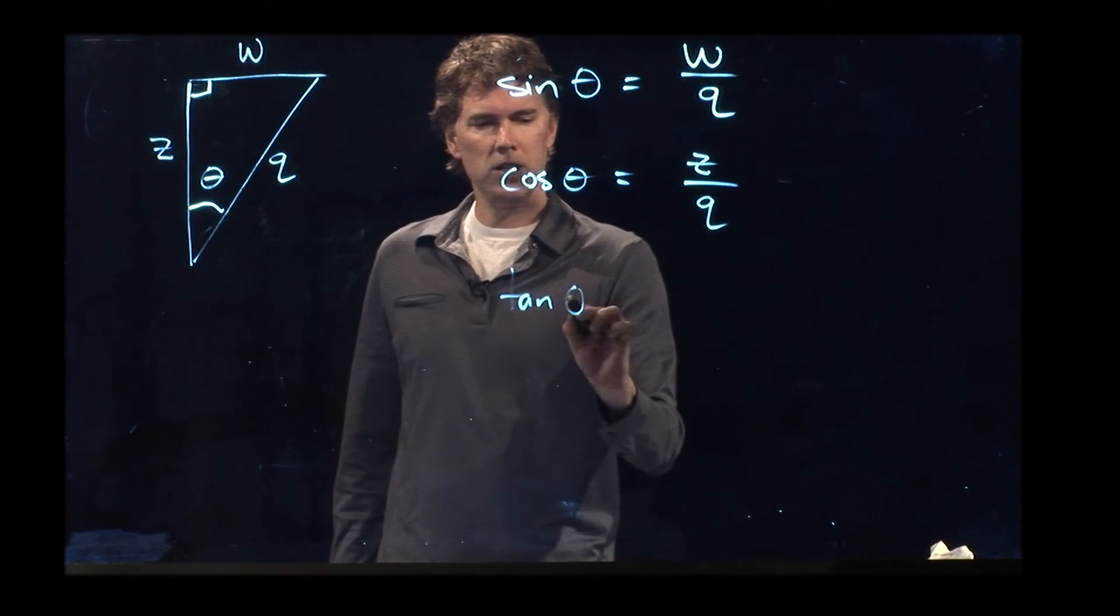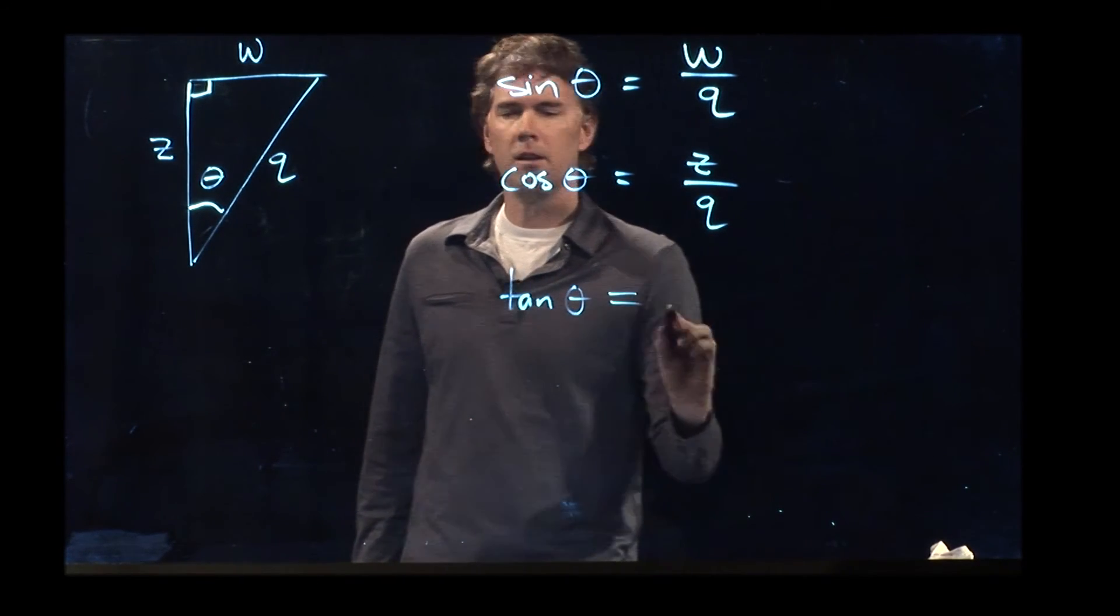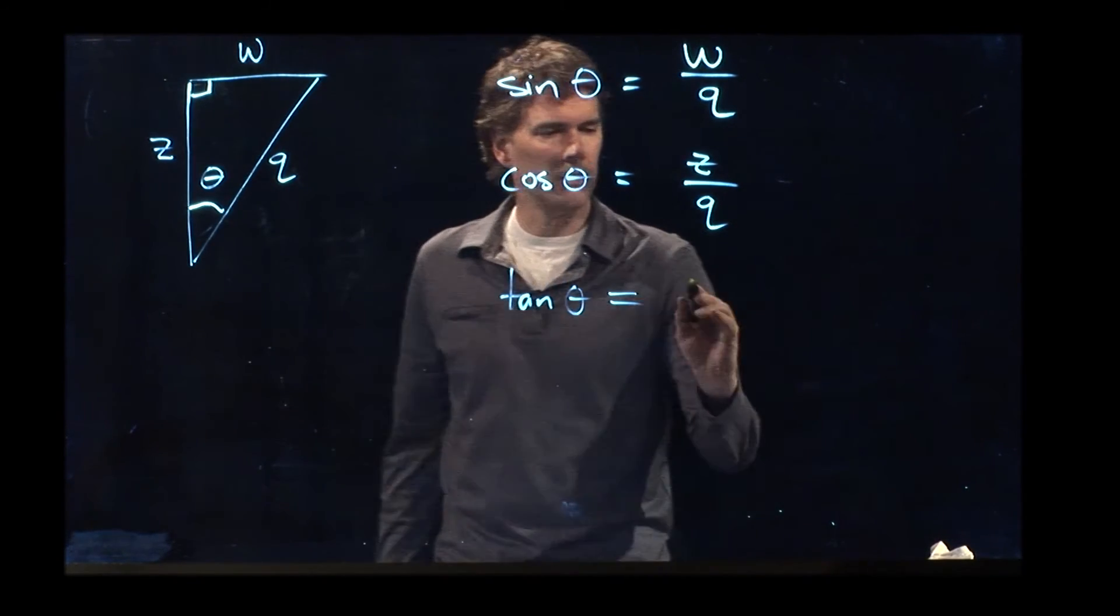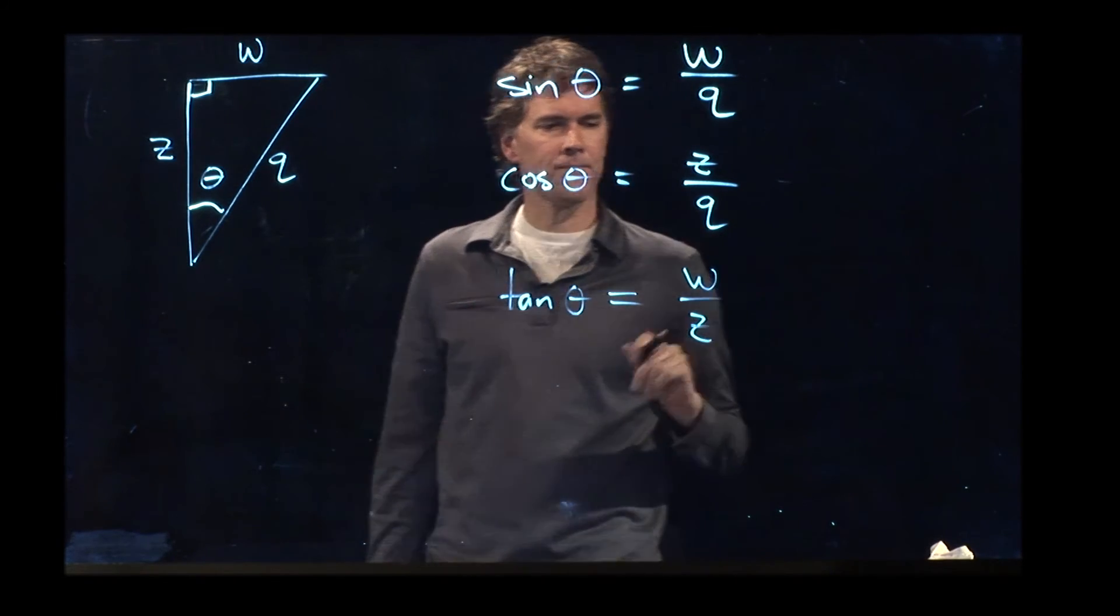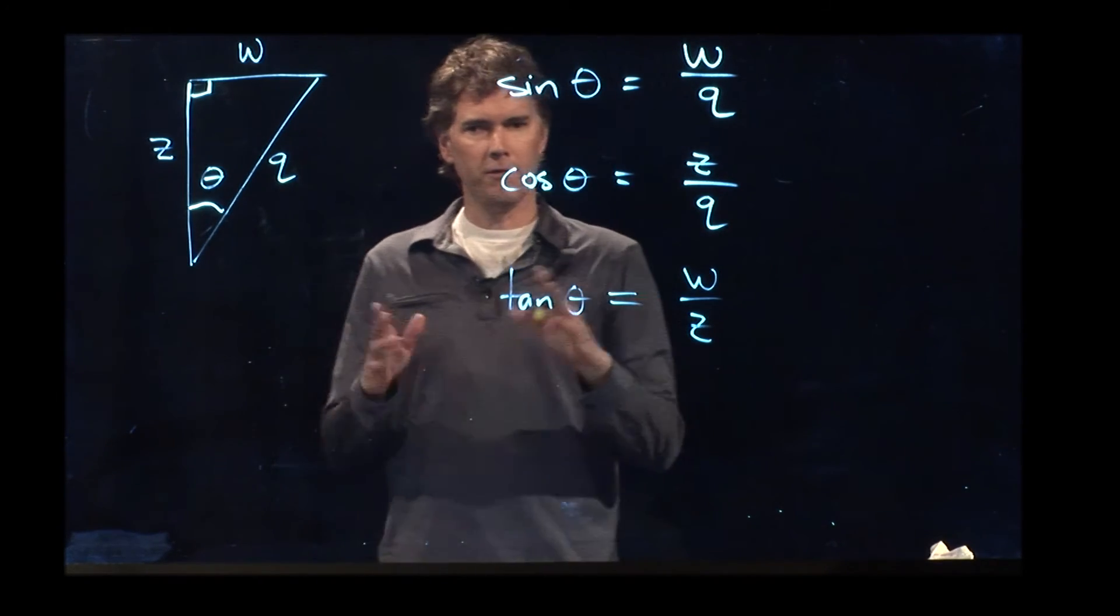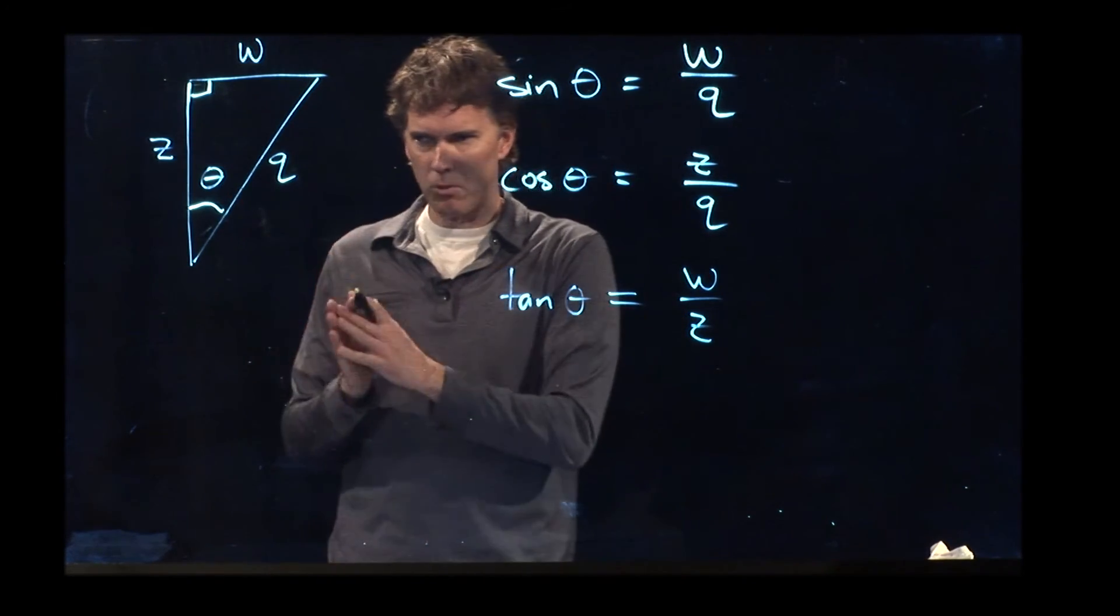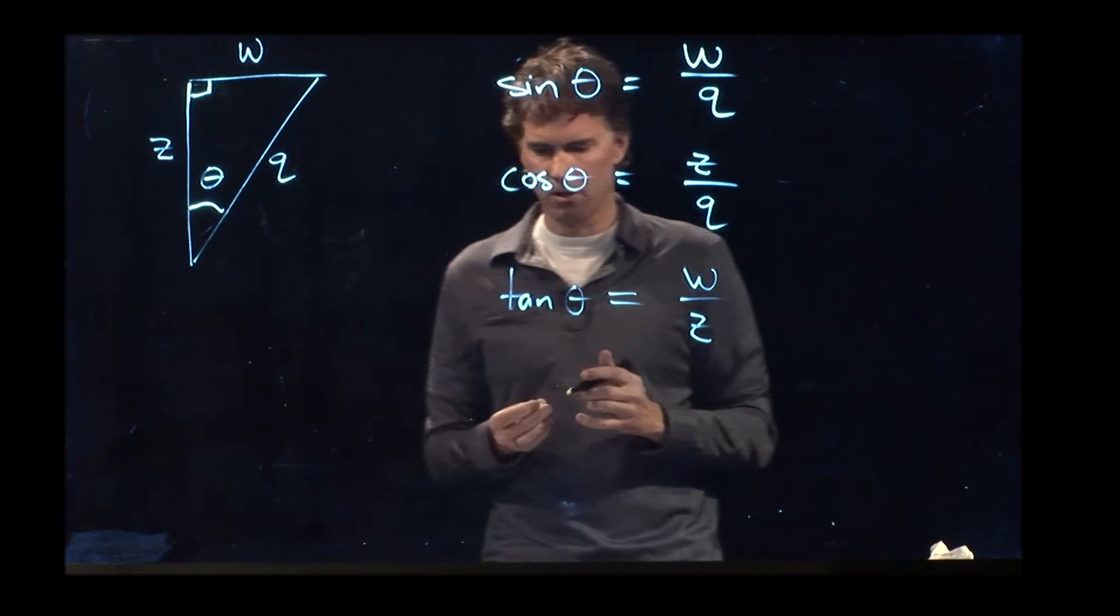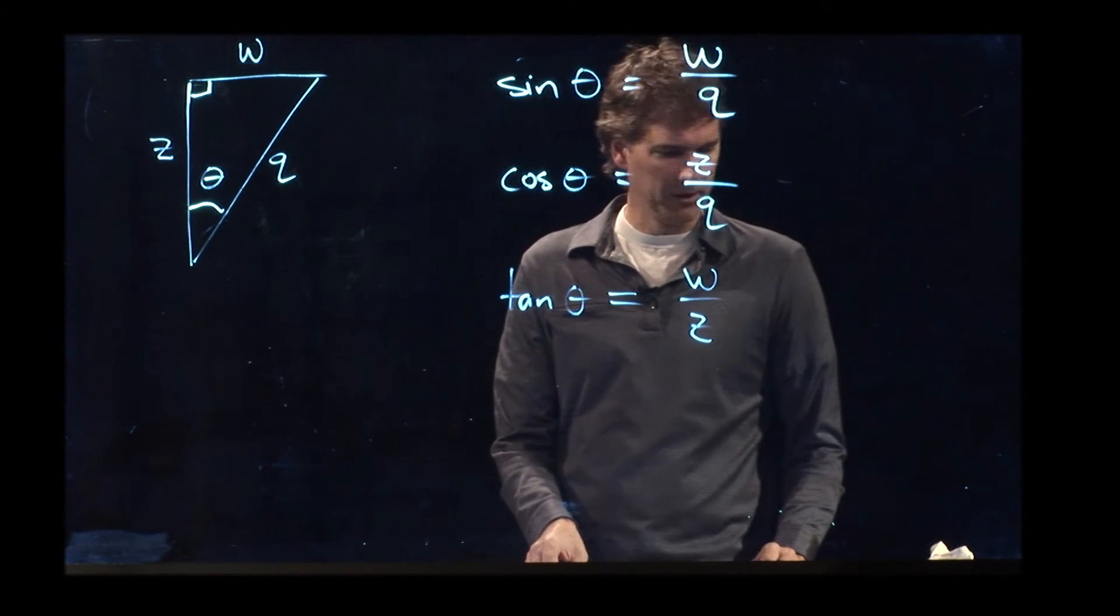And then finally, tangent of theta is going to be opposite W over adjacent Z. In physics, we're going to end up working with X and Y's, but those are just variables, so we can use any variables we want. All right? Hopefully that is reasonably clear.